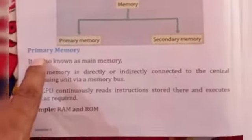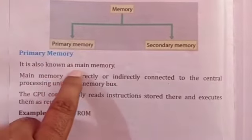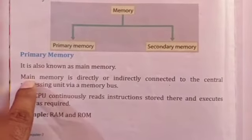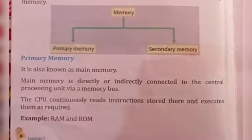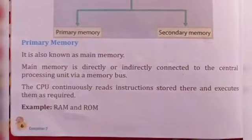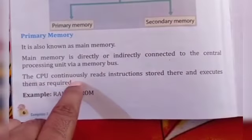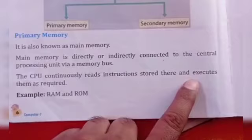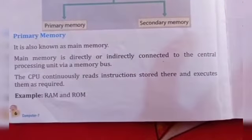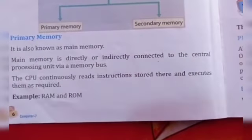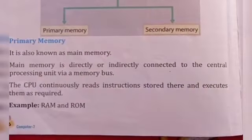Primary memory is also known as main memory. Main memory is directly or indirectly connected to the central processing unit via memory bus — यानि यह main memory आपके CPU से memory bus के द्वारा connected होती है। The CPU continuously reads instructions stored there and executes them as required. Examples of primary memory are RAM and ROM.